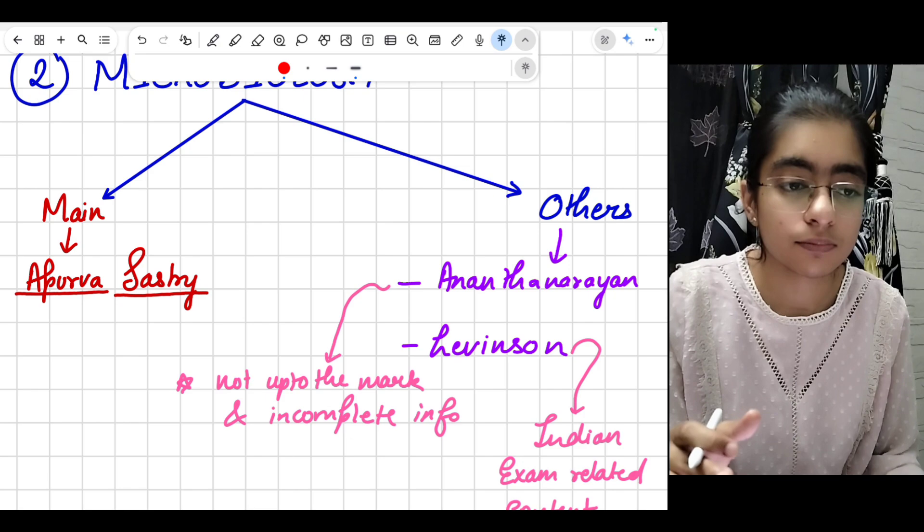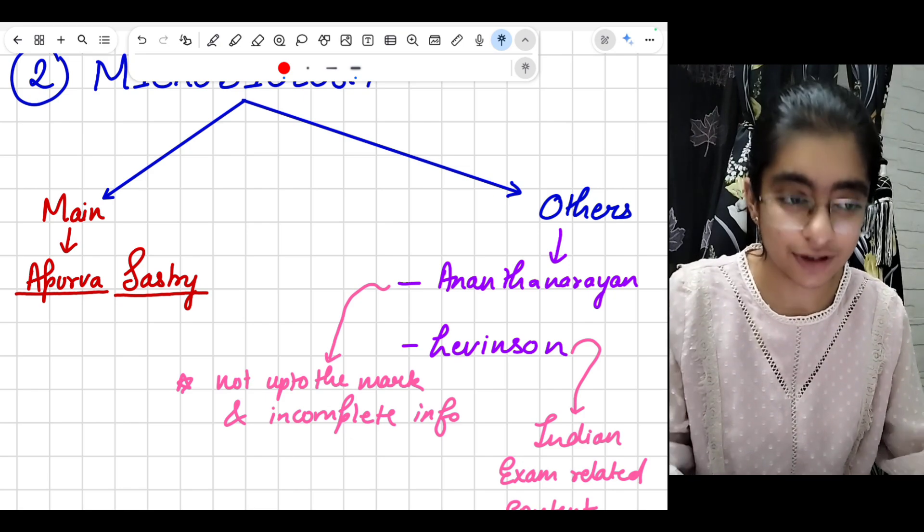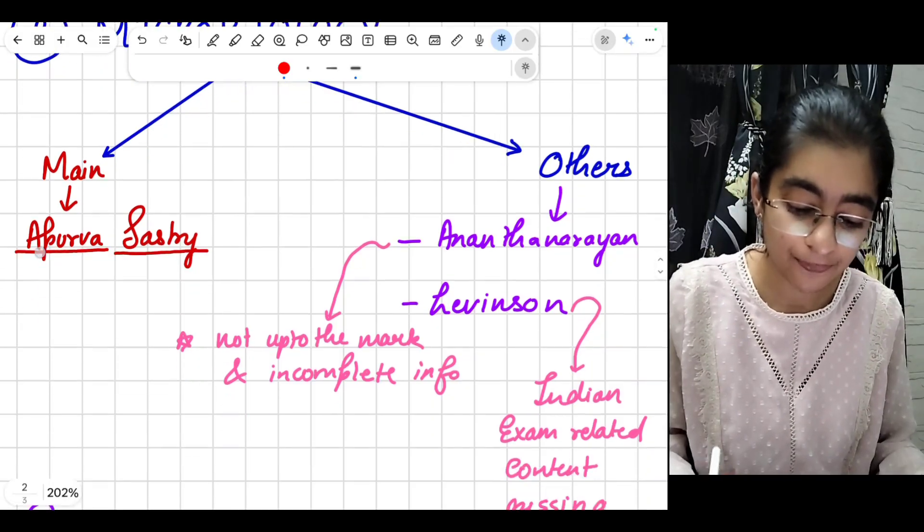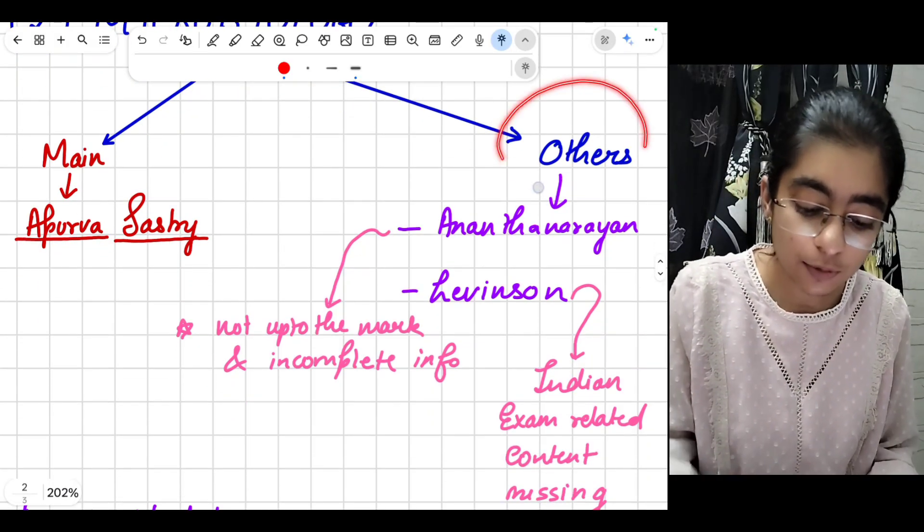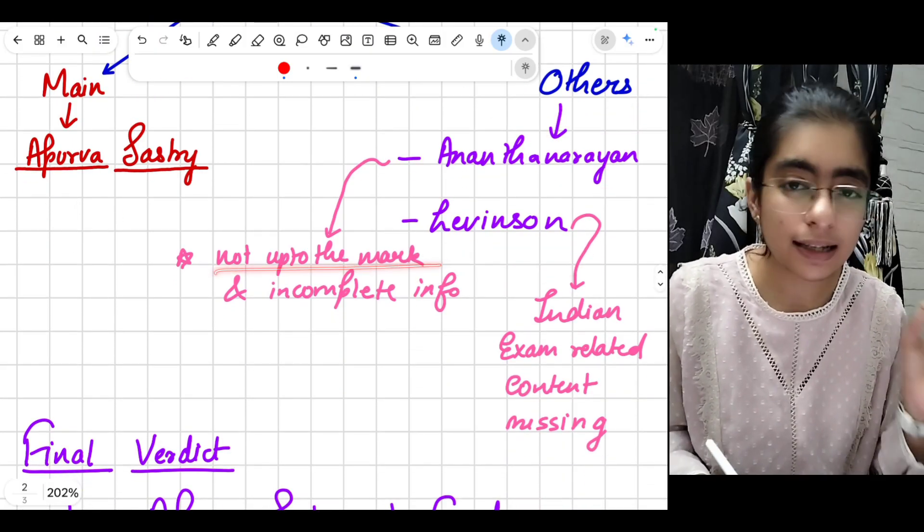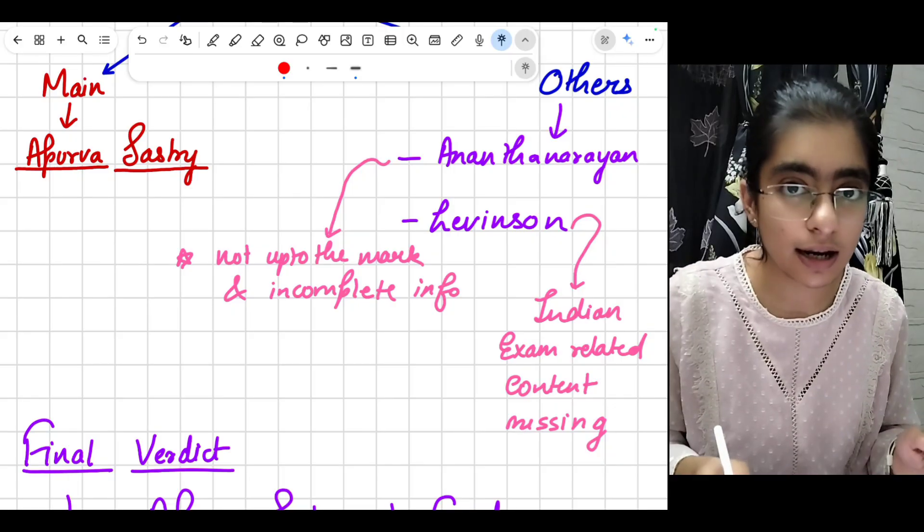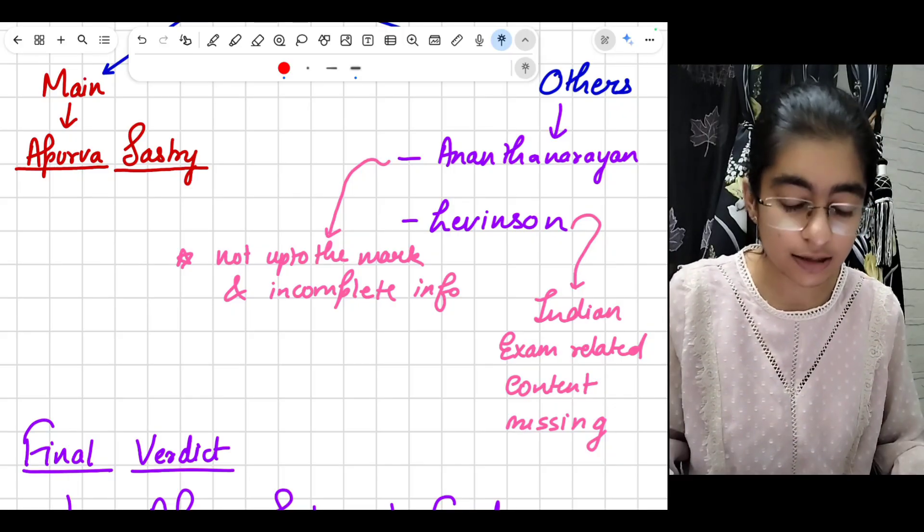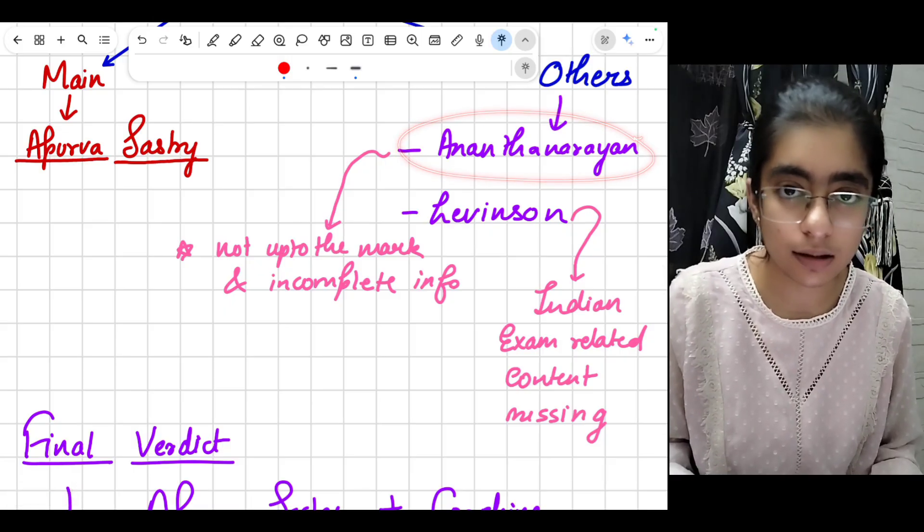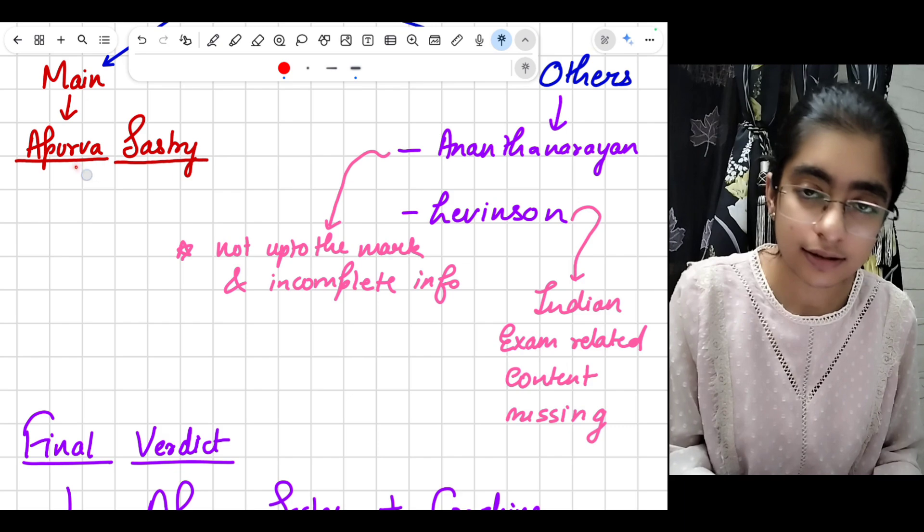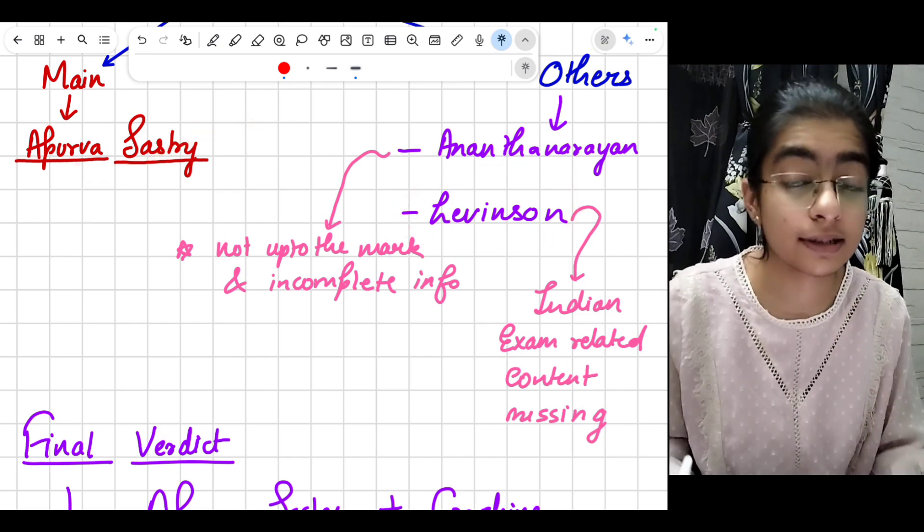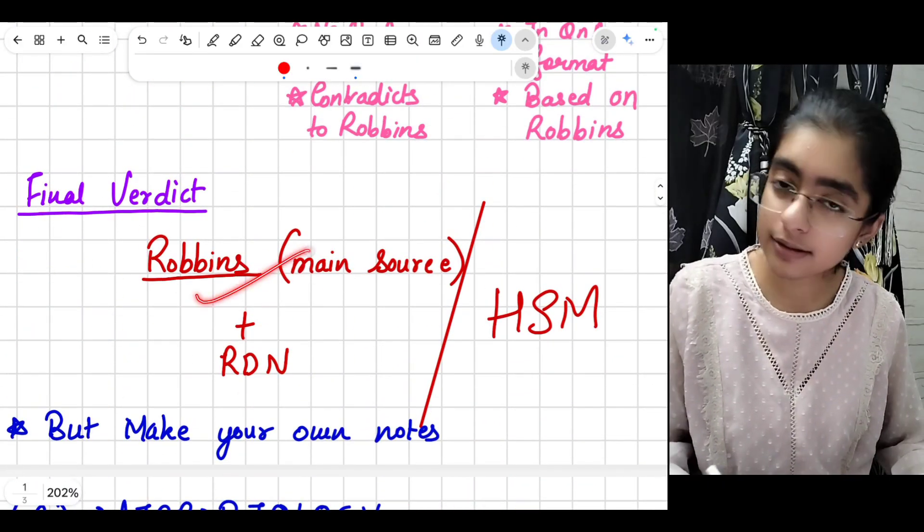Some people don't like the way of writing of Apoorva Shastri. Some people find it confusing as well. The other books are Ananthanarayan and Levinson. Ananthanarayan is not up to the mark and not complete info is there in Ananthanarayan in the latest editions, which is system-wise micro. So I won't suggest you to buy this book and follow it as well.